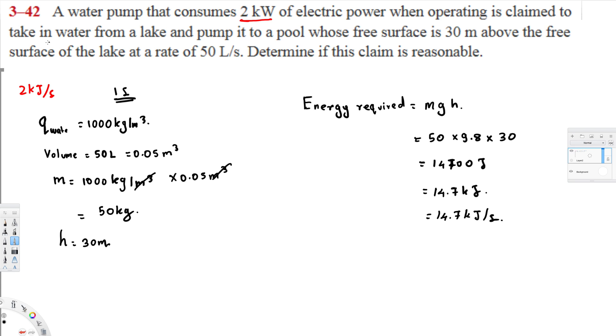To transfer this water, to take in water from the lake and pump it to a pool, we need 14.7 kilojoules per second. But the water pump only consumes 2 kilojoules per second. So therefore, we don't have enough energy to do this process. Therefore, we can say the claim is unreasonable.